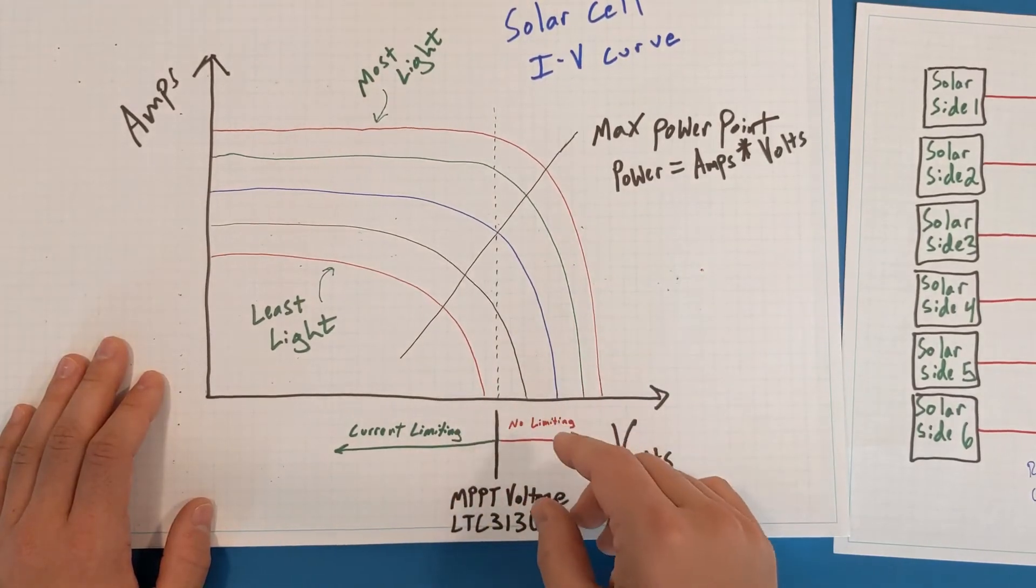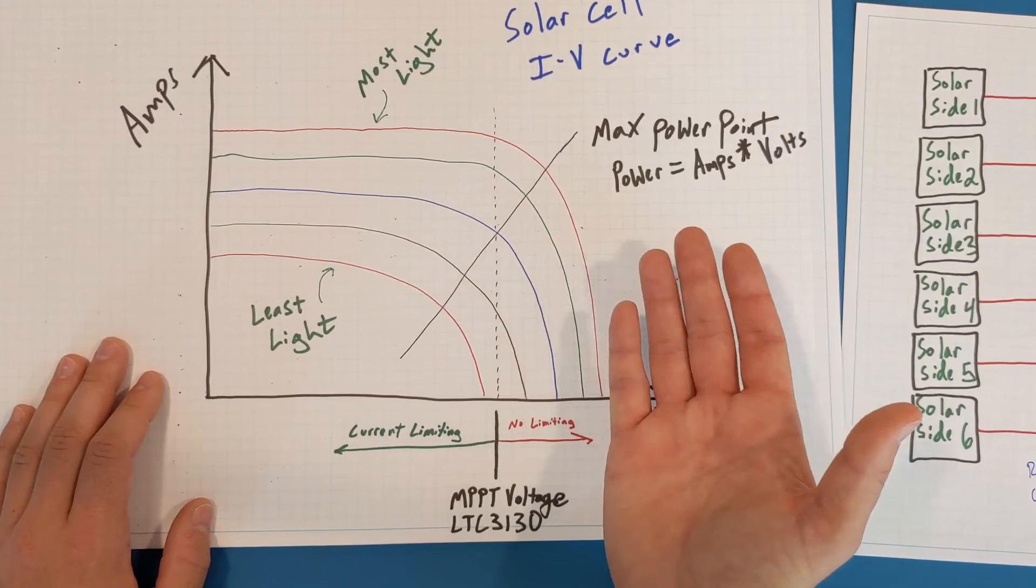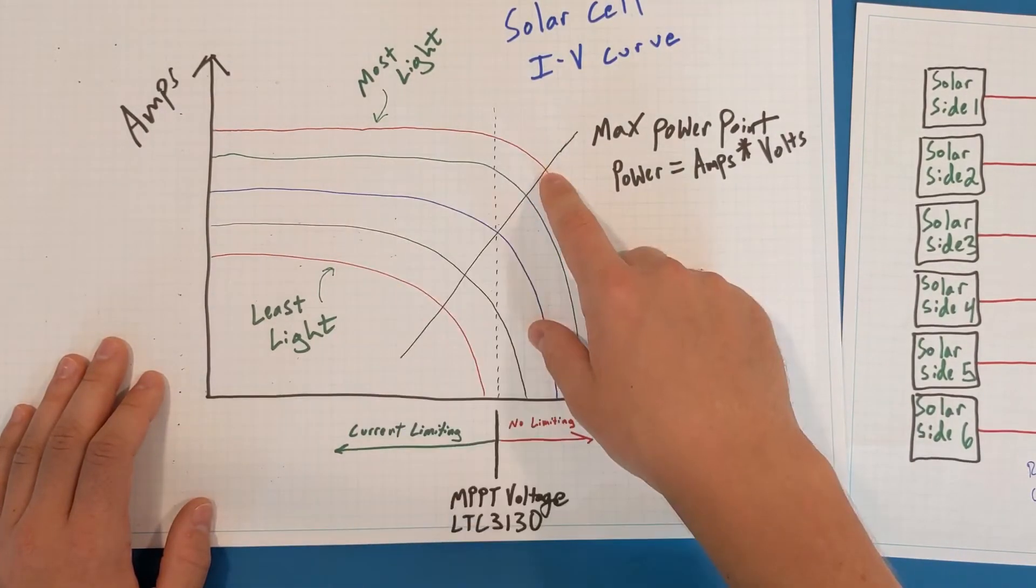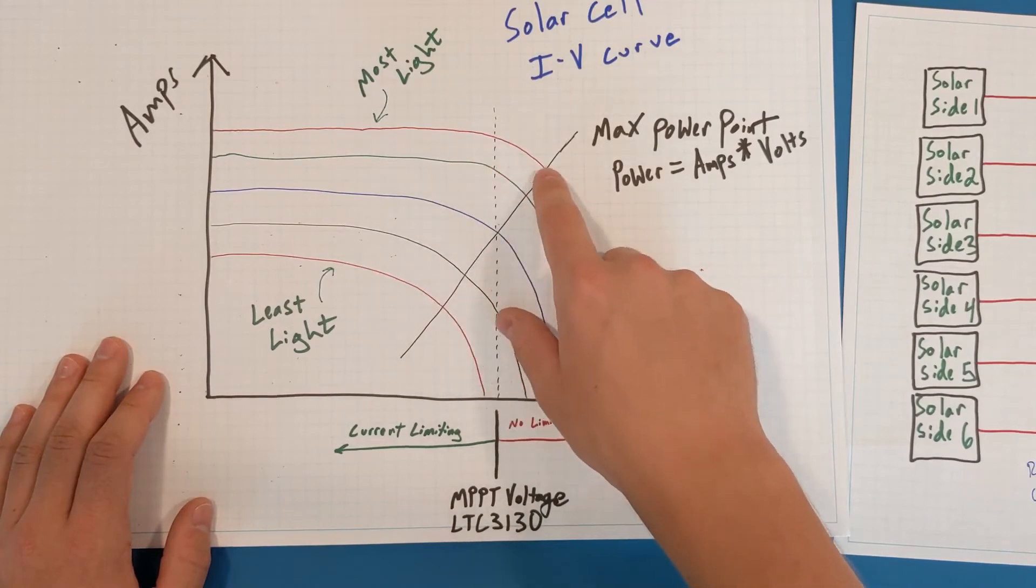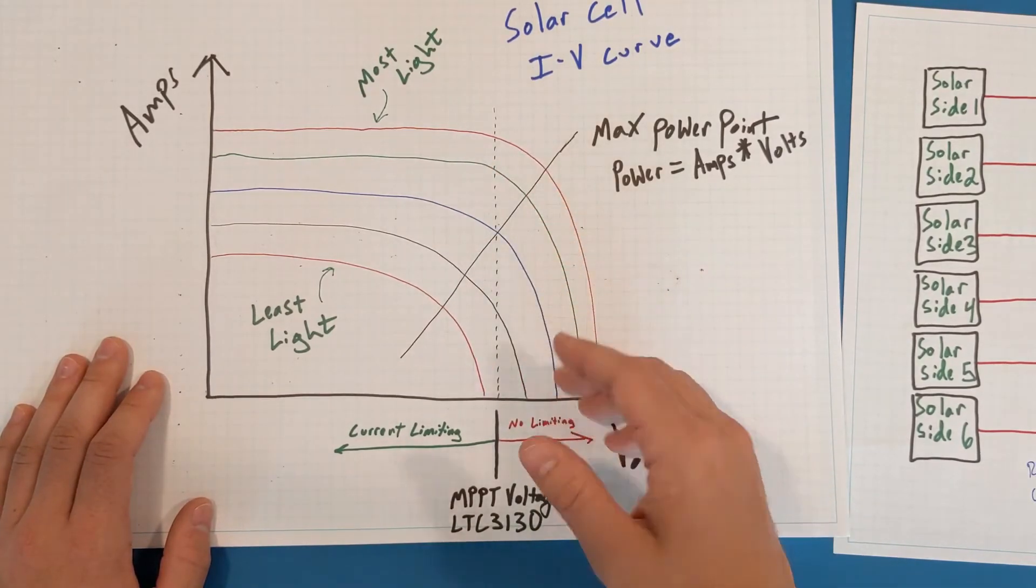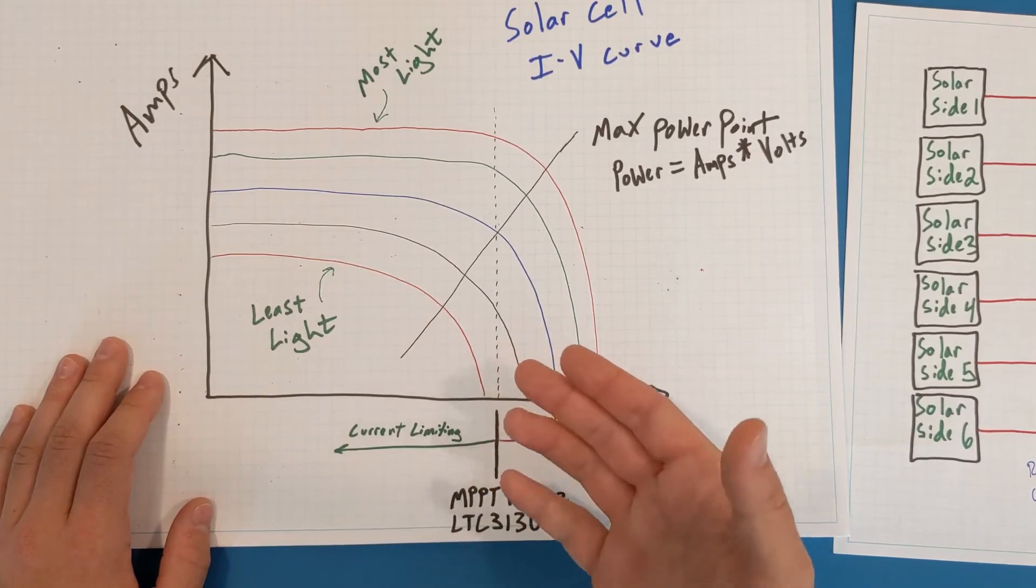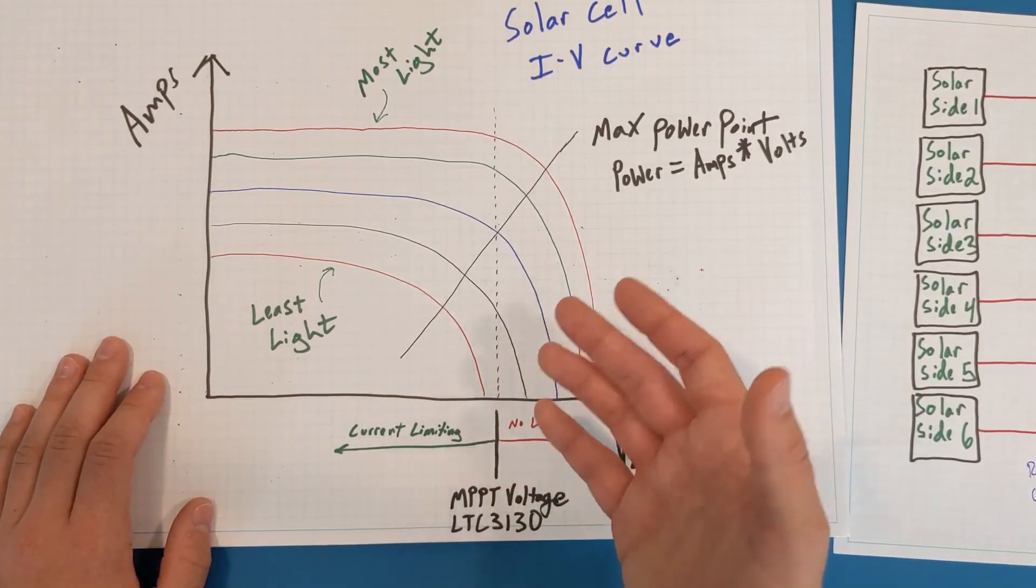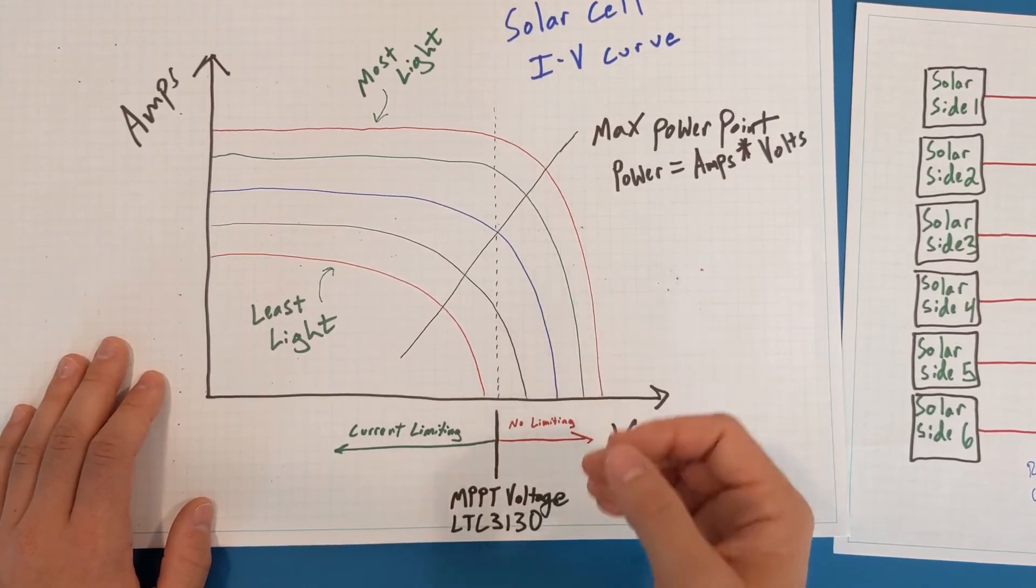Also, this deals with solar panels under different varying light conditions. If you set the maximum power point voltage only at the highest light condition, so if you set the voltage over here, that might not help you much for the other curves when you're experiencing less light. So you might not be able to actually harvest any energy from a lower light condition.